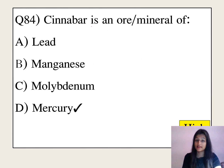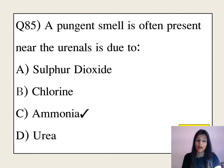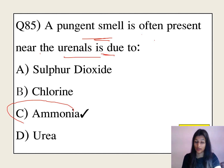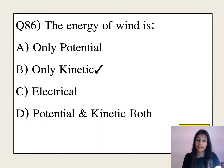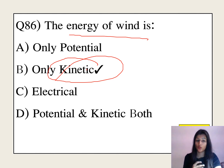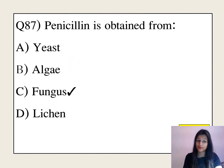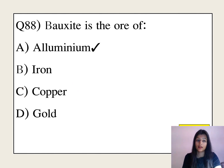Cinnabar is an ore of mercury. A pungent smell near uranus is due to ammonia. What is the energy of wind? Wind has kinetic energy. Penicillin is obtained from fungus. Bauxite is the ore of aluminium.